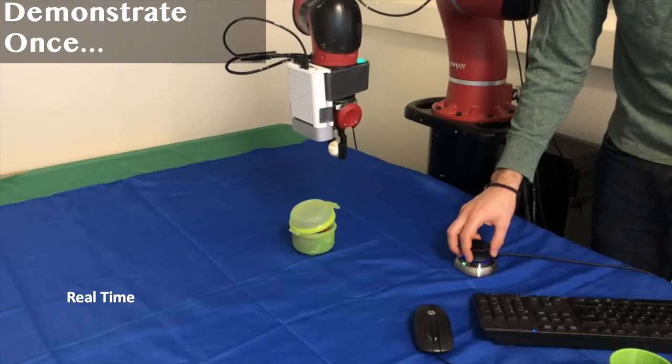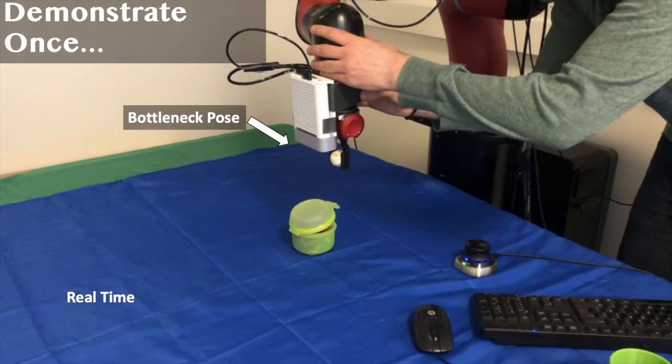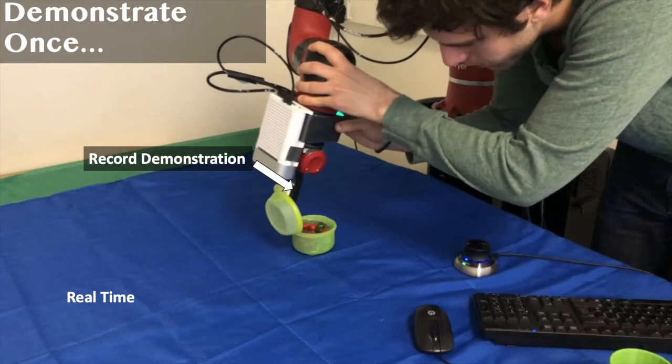To achieve this, we first move the end effector to what we call the bottleneck pose and capture an image from the wrist camera. We then perform the demonstration, recording end effector velocities in the end effector frame during the process.